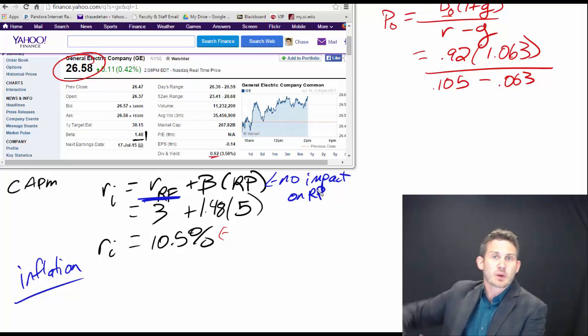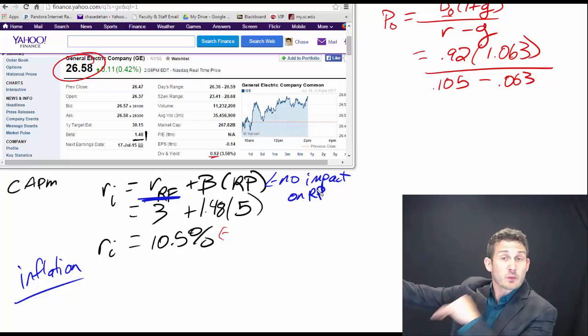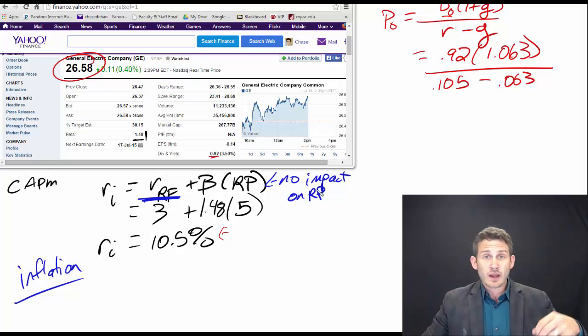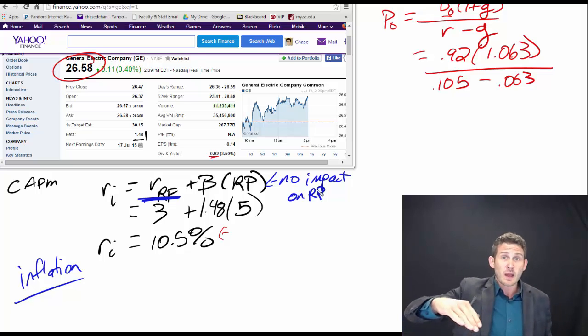This is just the additional premium on top of the risk-free rate. But we're gonna just look at this because what's gonna happen when we have high levels of inflation, that means that the required return, the base level, is going to have to increase.